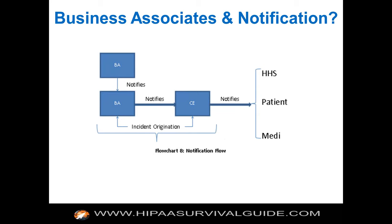This graphic shows that subcontractors of business associates are also now on the hook. If you had a chain of subcontractors, the business associate would notify its business associate in the case of a breach, and then the first-line business associate that has a relationship with the covered entity would notify the covered entity. Then it's the covered entity's responsibility, depending on the circumstances, to notify HHS, the patient, and potentially the media. Remember, HHS and the individual are always notified; only under specific conditions does the media have to be notified.